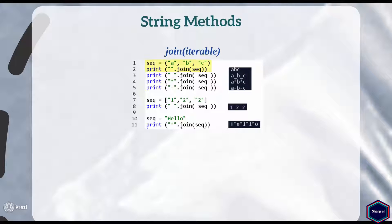In my first example, I have a tuple as an argument and I have no separator string, so the join method concatenates all the elements of the tuple object and returns them as a single string object. In my next example, I have an underscore as separator, and the join method returns a string object by putting the separator string between each element of the iterable. Similarly, you can also have a list containing string elements as an argument, as shown in the next example.